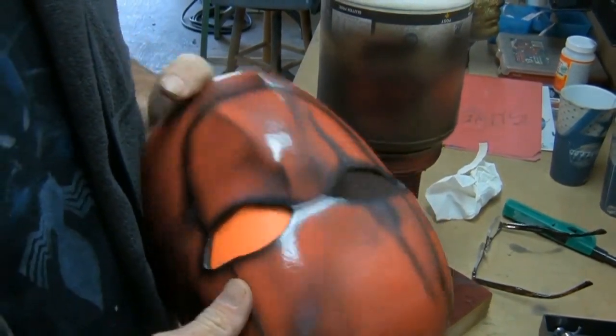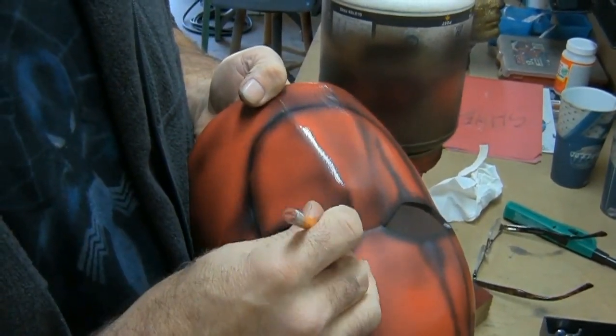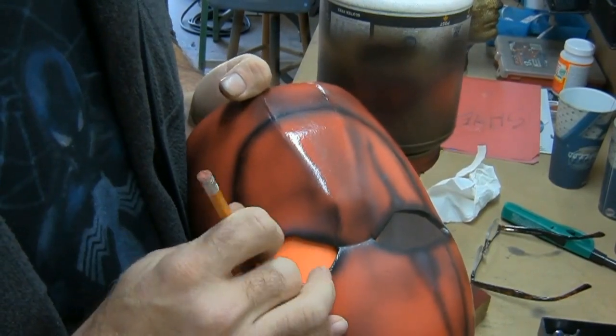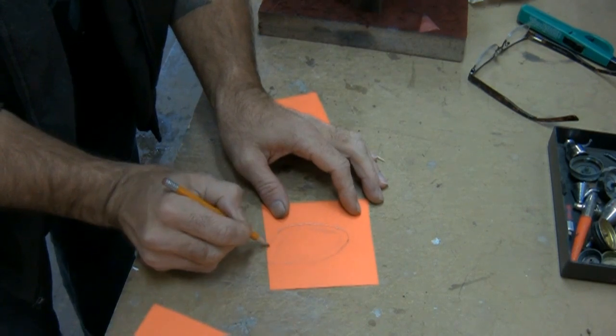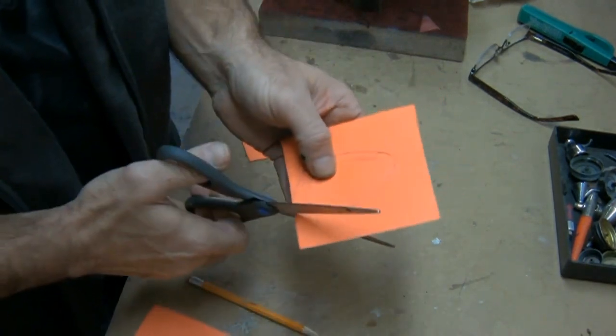Take a piece of paper, line it up behind the eye and trace it out. Then scale that up around a quarter of an inch and cut it out to make your eye pattern.